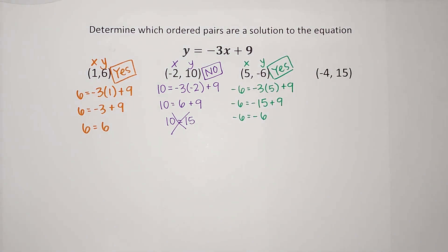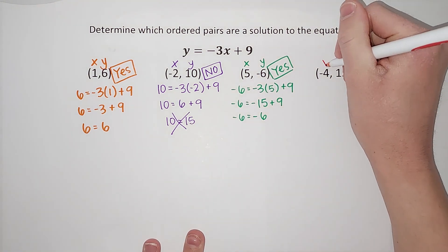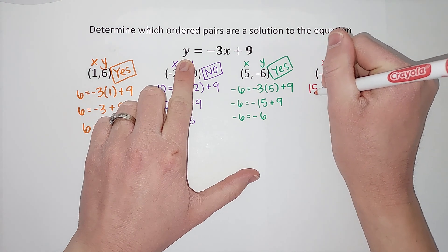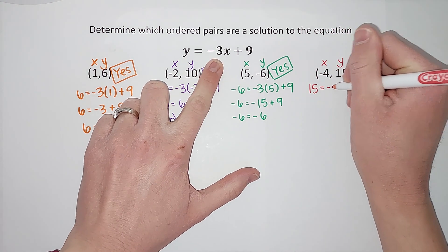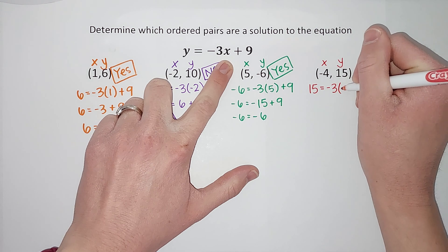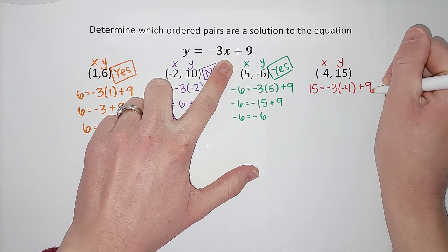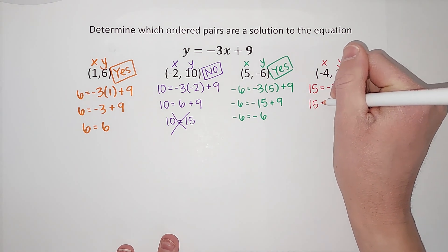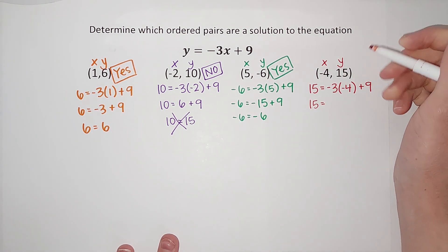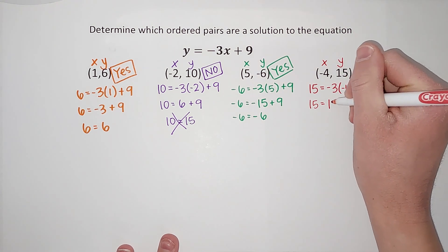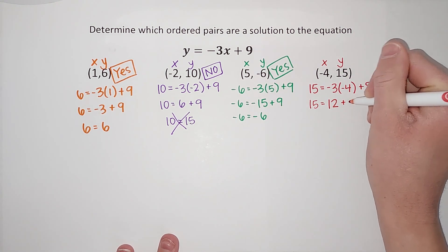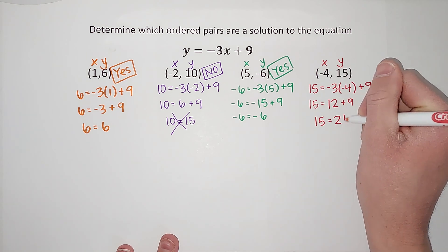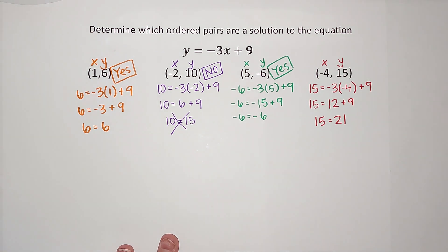So yes, this one is a solution. Last one — what color haven't I used? Red. First one is x, second one is y. Y equals, so 15 equals negative three times negative four, plus nine. Negative three times negative four — a negative times a negative is a positive, three times four is twelve, plus nine. 15 equals 21, which is not true.